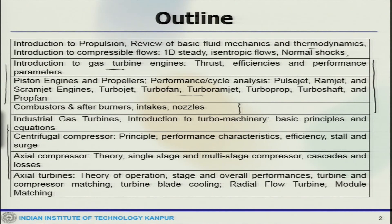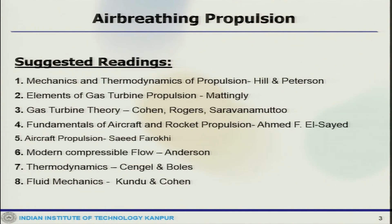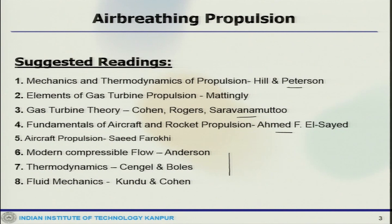The later half of the discussion contains all the turbomachinery topics — because any aircraft engine has two key components, and one of the important components is the turbomachinery part, which includes the rotating components. We will do a lot of discussion on centrifugal compressors, axial compressors, axial turbines, and finally finish with the mapping of these components. These are the reference books that can be followed, along with some basic compressible flow and fluid mechanics books.